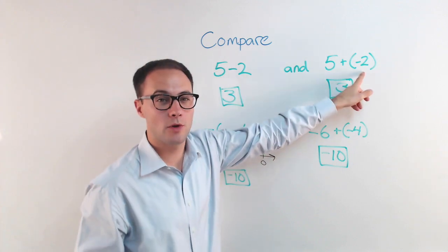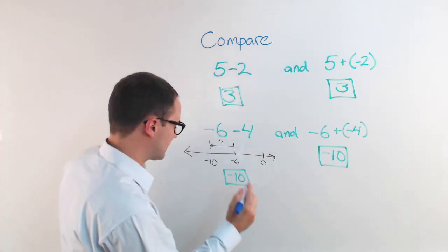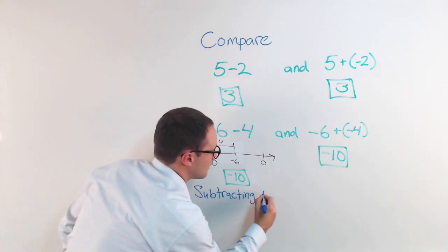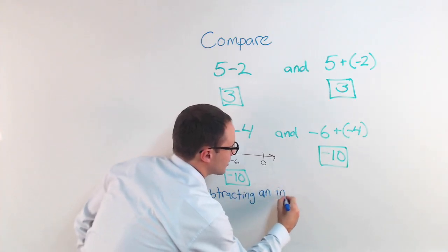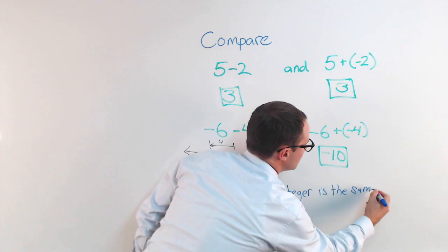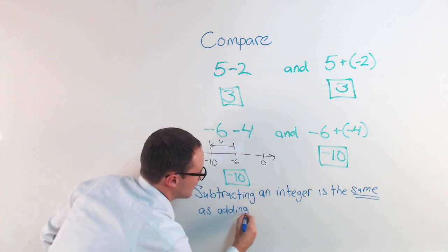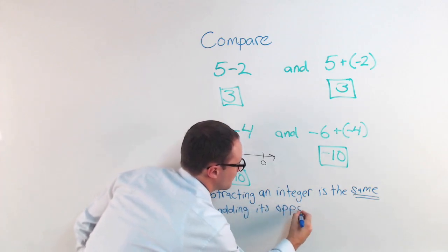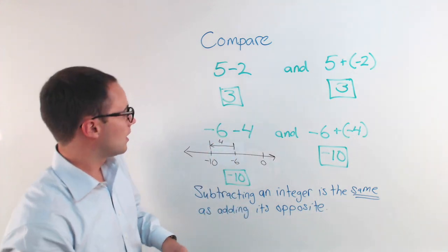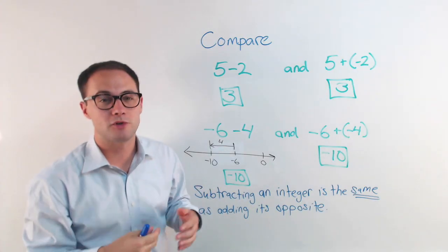Positive 2 and negative 2 are opposites. Positive 4 and negative 4 are opposites. So, let's make sure you write that down. Subtracting an integer is the same as adding its opposite. So, we're going to use that information and that rule to help us solve problems with subtracting integers.